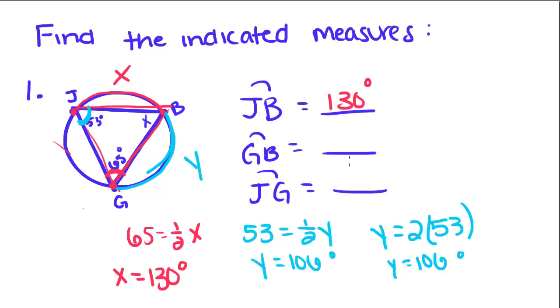GB has a measure of 106 degrees. Now, finally, they want the measure of JG. JG is captured by this angle X, but we don't know the measure of angle X. So we're going to use our rules of the interior angles of a triangle to solve for X.